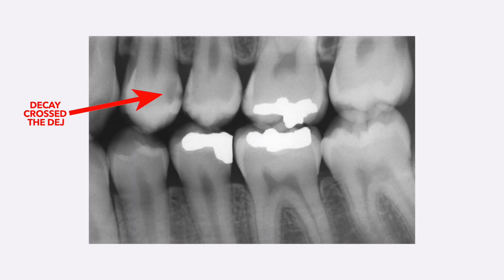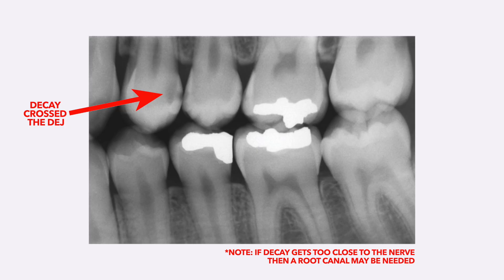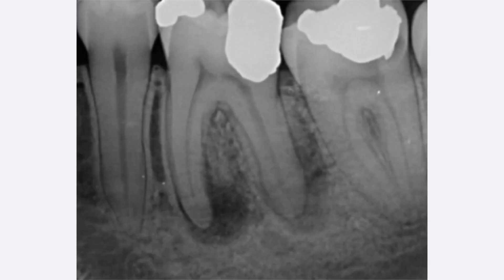The simple way to explain it is that when decay crosses that line, you have to get a filling. Once decay is in the dentin, it's going to keep growing and growing, and the only way to stop it is to drill it out and fill it. So that was kind of a tangent on how to know if your cavity needs a filling or not, but at least you can see what the dental pros are talking about when they're trying to determine whether or not they need to fill your cavity.